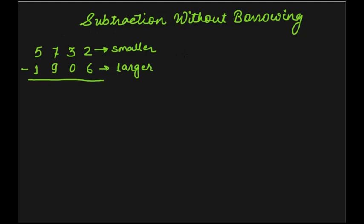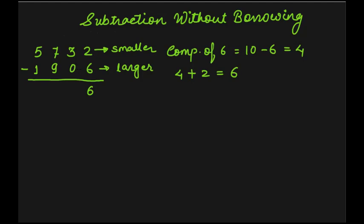So we will simply take the complement of number 6, that is 10 minus 6, which gives 4. Now we will add this 4 to the upper digit at the ones place, that is 2. Thus, 4 plus 2 gives 6. So we will write 6 as the answer at the ones place.